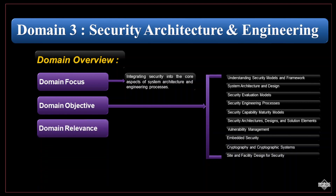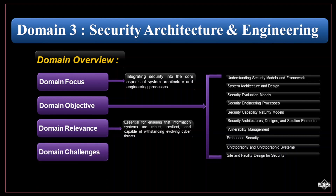Domain 3 is highly relevant in the field of information security because it addresses the critical aspect of securing systems and infrastructure from the ground up. It ensures that information systems are designed and maintained with a focus on security, resilience, and the ability to withstand evolving cyber threats. The domain covers a wide range of topics, making it challenging to master all the concepts comprehensively. Keeping up with the evolving landscape of security models, frameworks, and technologies can be demanding.